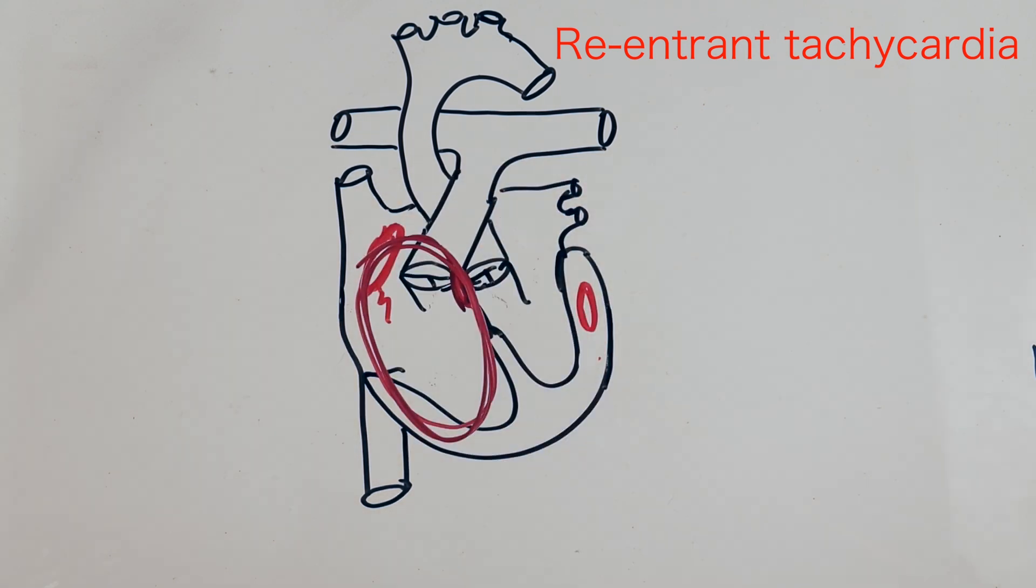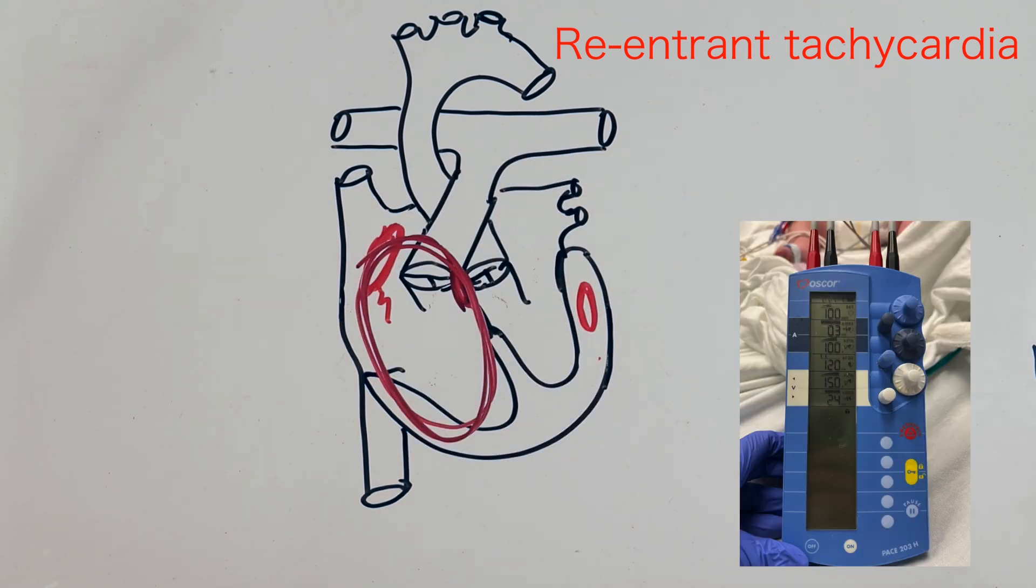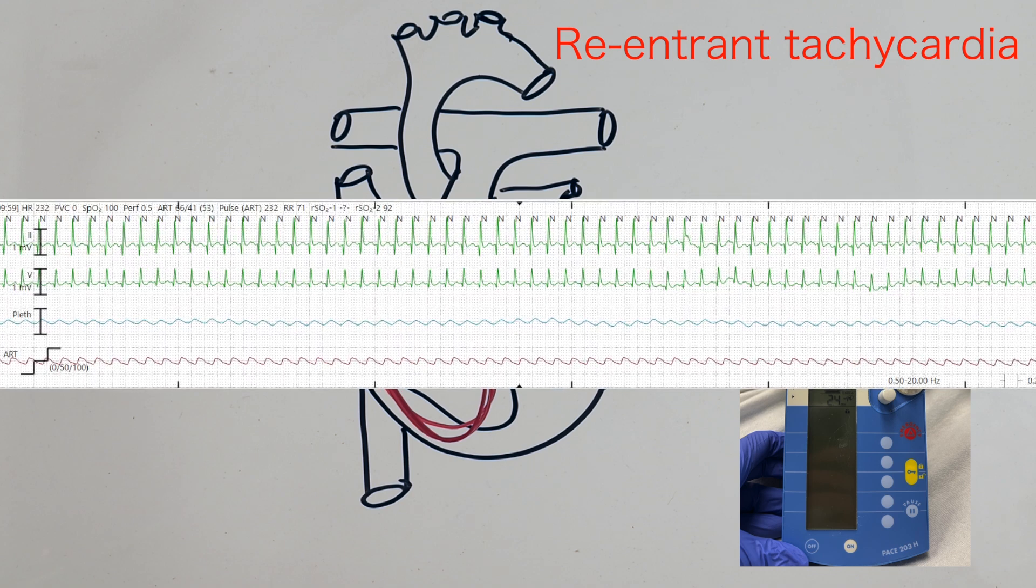But since we are going to be using the atrial pacing wires to break the circuit, this only works with re-entrant circuits that pass through the atria. In a pediatric CICU, this mostly means atrial flutter and SVT.